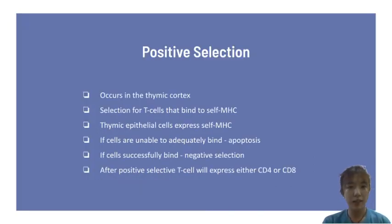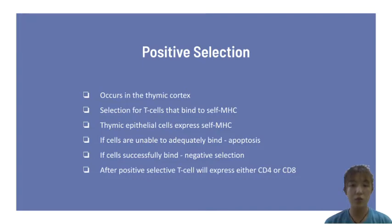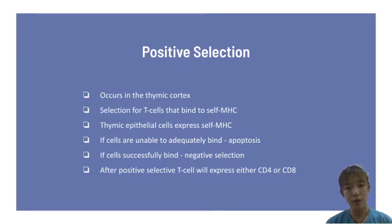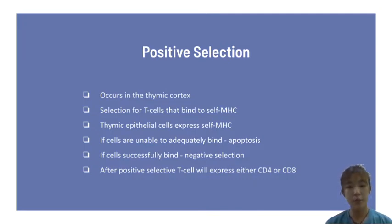Positive selection occurs in the thymic cortex to allow only the T-cells that bind to self-MHC to survive. It selects T-cells that bind to self-MHC, either MHC class 1 or 2, because T-cells must bind to our own cells to function properly. They bind to antigen-presenting cells and other normal cells to mediate an immune response. Thymic epithelial cells present in the thymus express MHC molecules which interact with the developing T-cells. If T-cells cannot adequately bind to the MHC molecule, they undergo apoptosis. T-cells that can successfully bind to self-MHC will go on to the next step of T-cell development, which is negative selection. After positive selection, T-cells will express either CD4 or CD8 but not both.